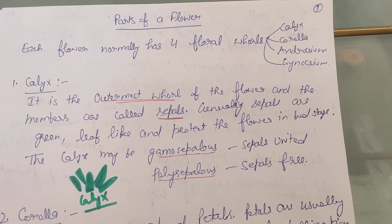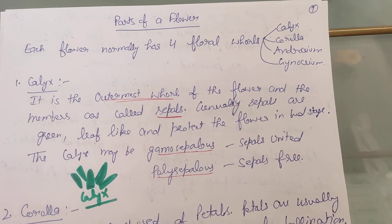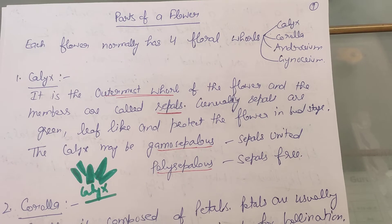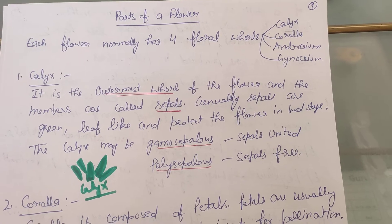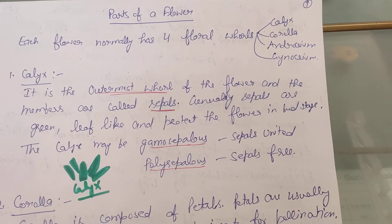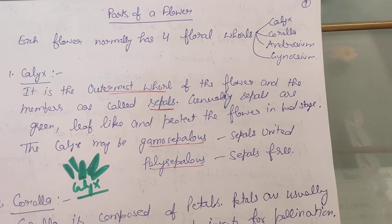The first one is calyx. It is the outermost whorl of the flower and its members are called sepals. Generally, sepals are green leaf-like structures which protect the flower in the bud stage.